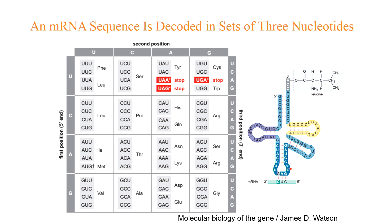Codons specifying the same amino acid are synonyms. For example, UUU and UUC are synonyms for phenylalanine, whereas serine is encoded by the synonymous codons UCU, UCC, UCA, UCG, AGU, and AGC.